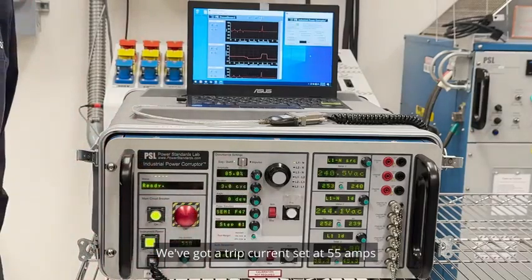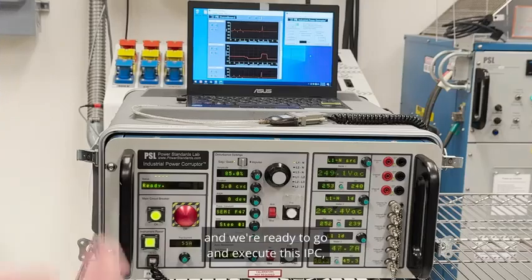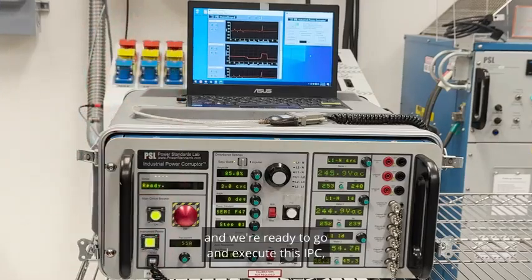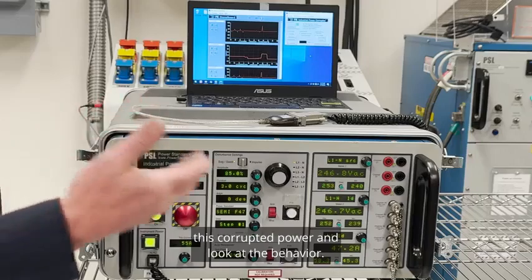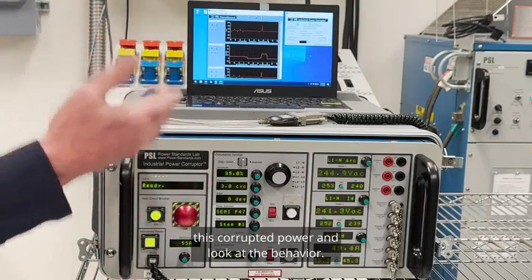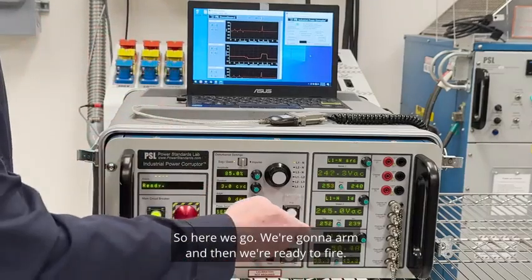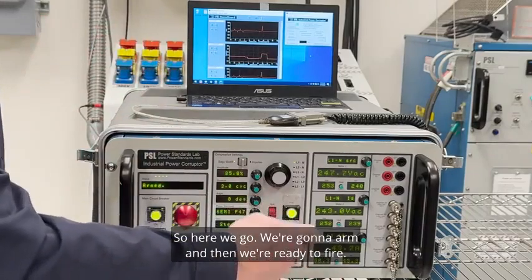We've got a trip current set at 55 amps and we're ready to go and execute this corrupted power and look at the behavior. So here we go, we're going to arm and then we're ready to fire.